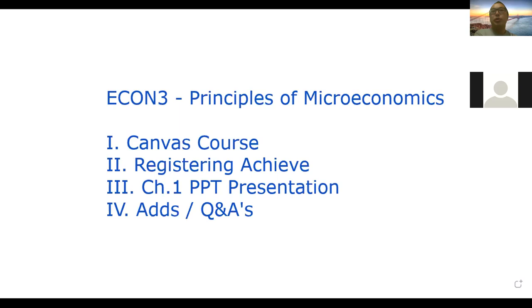So today, what we're going to do is basically go over some of the stuff that will help you succeed in this class. First, we're going to go over the Canvas course shell to explain how you're going to get resources in this class. After that, we'll take a look at the course syllabus together, and then we'll go over the registration process on Achieve, which is the online digital solution we adopted this semester. After that, I'll have a 10 to 15 minute break before we start the presentation for chapter one.